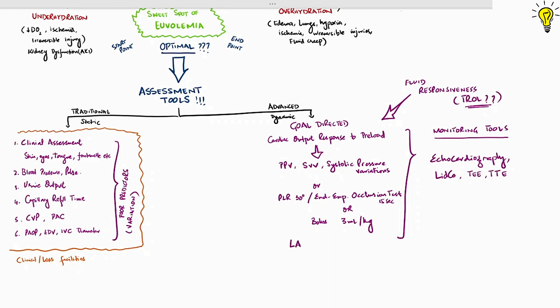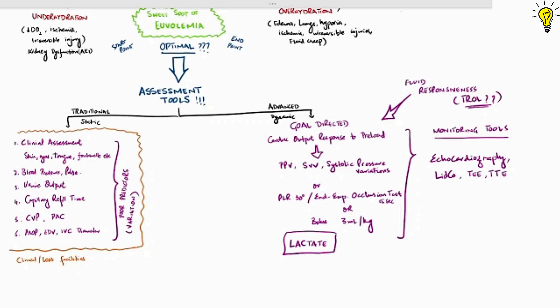Transthoracic or transesophageal echo are key monitoring tools for goal-directed fluid therapies. One key target is checking for lactate. Since tissue hypoperfusion would lead to anaerobic metabolism and production of lactate, lactate is an important marker of delivery of oxygen to tissues. It is a vital marker of balance between aerobic and anaerobic metabolism at tissue level. Lactate is also a good prognostic marker for trauma cases.